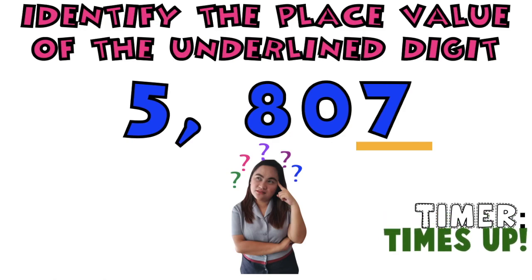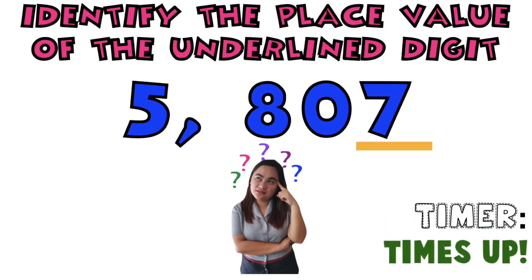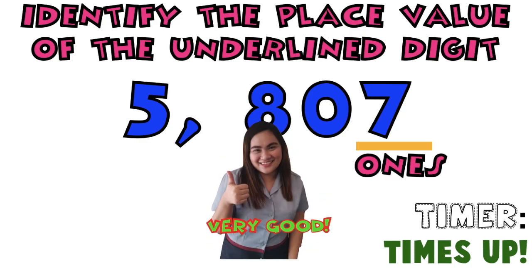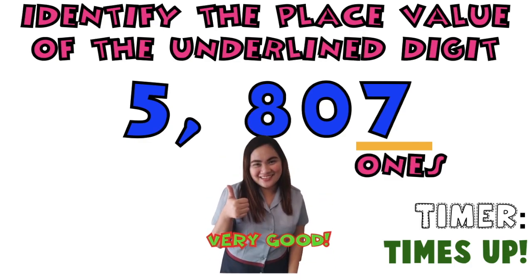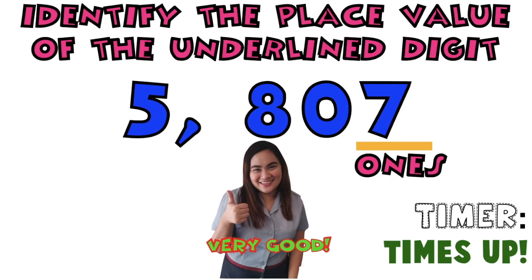Time's up! Let's see if your answer is correct. Children, what is the place value of digit 7? I can't hear you. What is it? Very good! That is ones place.